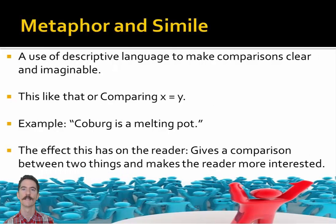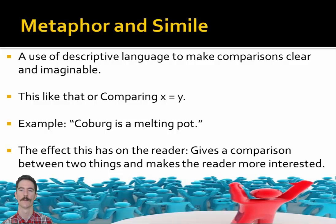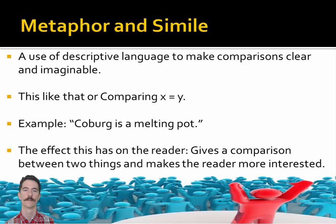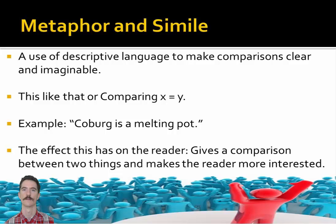Metaphor and simile. These are two distinct things put together for ease. This is any use of descriptive language to make comparisons clear and imaginable. In three words: this like that, or x equals y. For example, 'Coburg is a melting pot.' The effect is it gives a comparison between two things that makes the reader more interested — you're comparing things in an interesting or novel way.